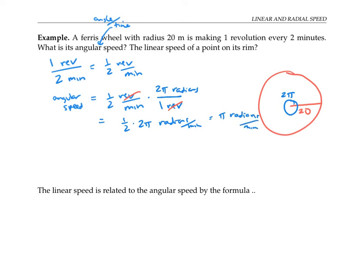The linear speed, the speed of a point on the rim. Well, the wheel is going π radians per minute. I got to somehow convert radians into distance.